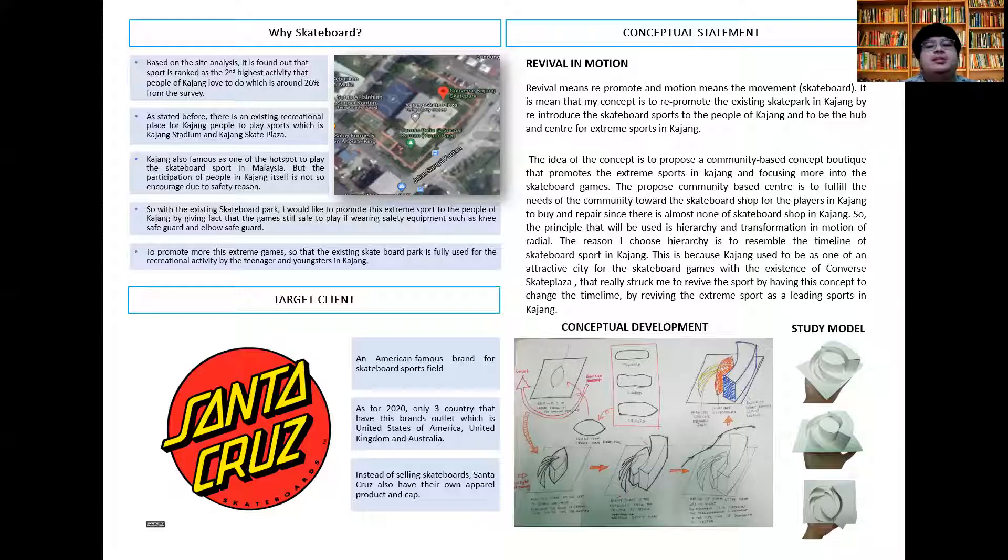The principles that I will use are hierarchy and transformation in motion of radial. The reason I choose hierarchy is to resemble the timeline of skateboard sports in Kajang. This is because Kajang used to be an attractive city for skateboard games with the existing Converse Skate Plaza. This really struck me to revive the sport by having this concept to change the timeline by reviving the extreme spot as a leading spot in Kajang.